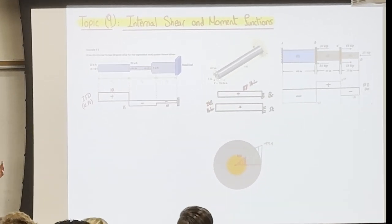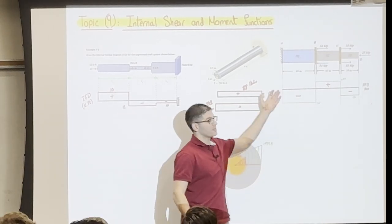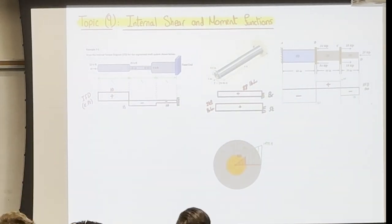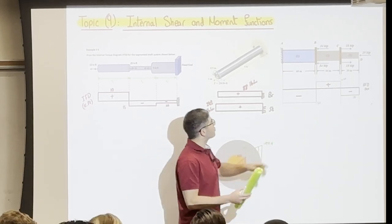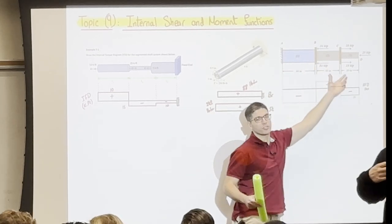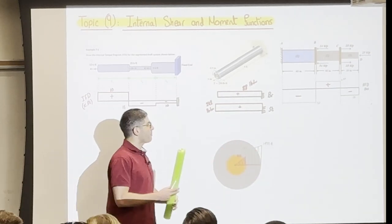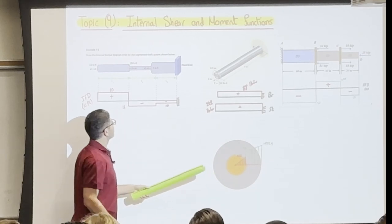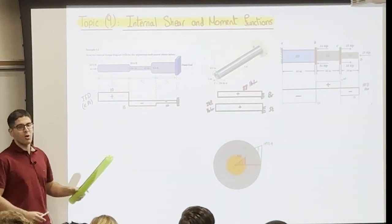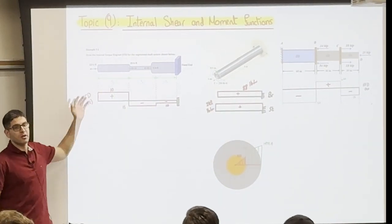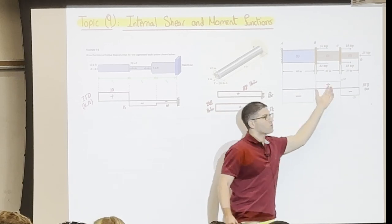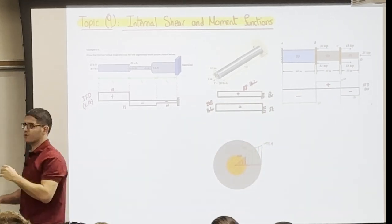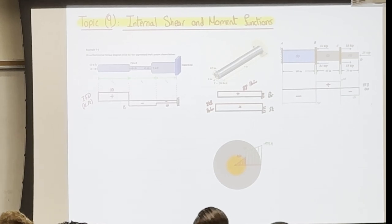I gave you a system with some external axial forces, and I asked you to draw the AFD, which tells me what each point in this member feels as a portion of the external loads. When we draw the AFD, or for example the internal torque diagram, we didn't care about what the material looks like. All we cared about was what forces are applied, so we drew the internal force diagram — whether it was AFD or the internal torque diagram.